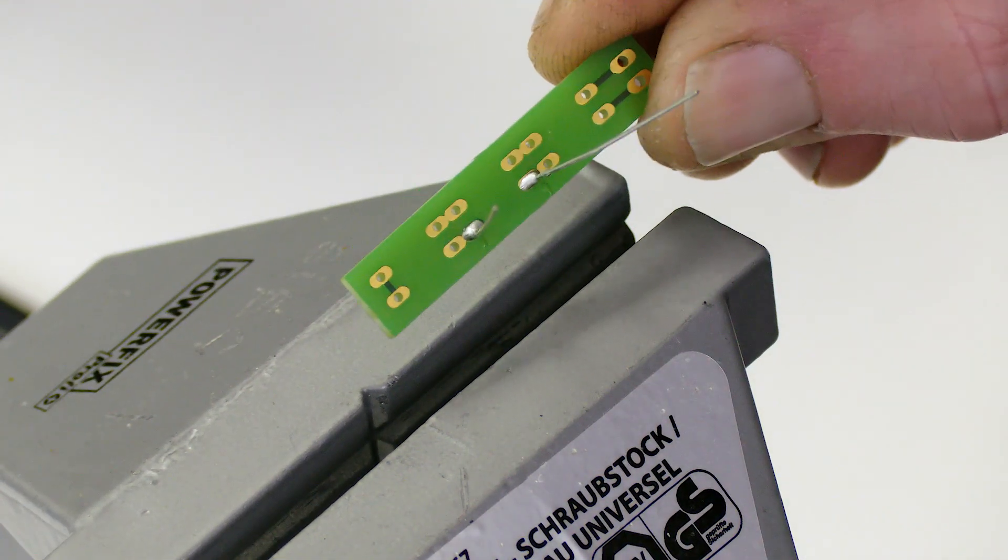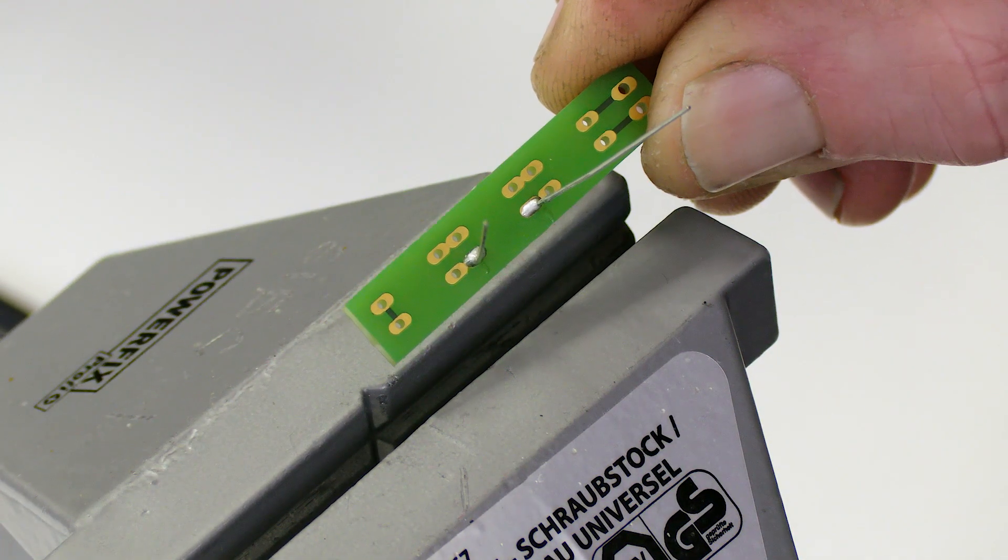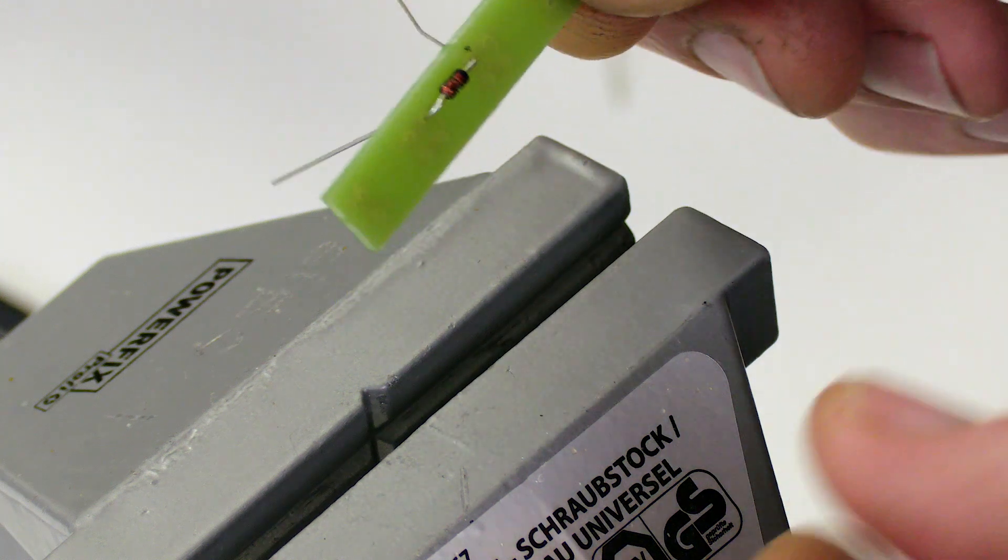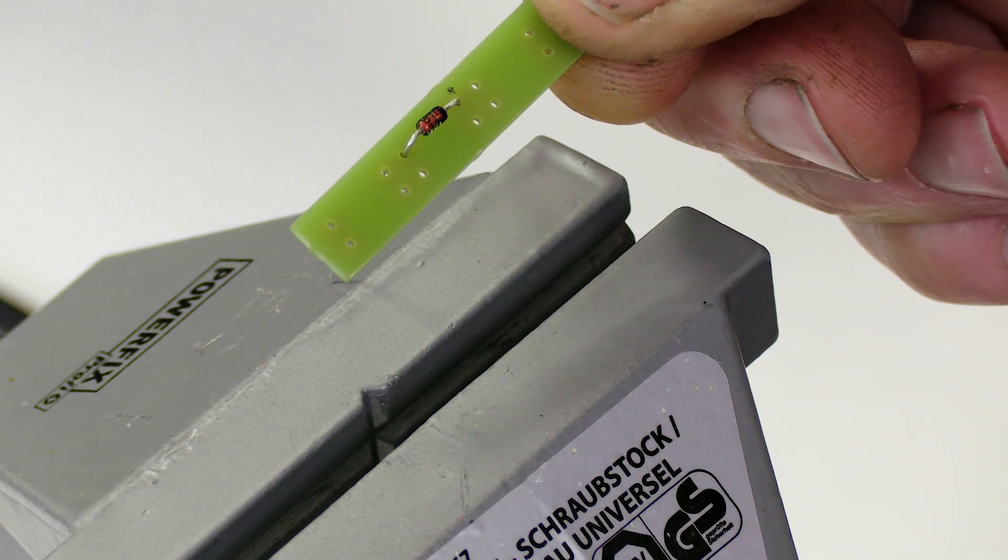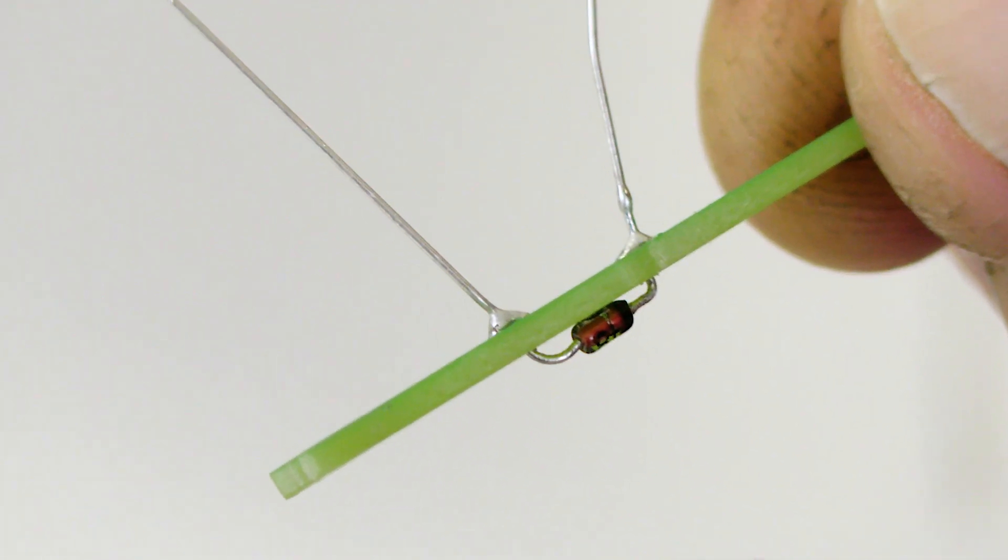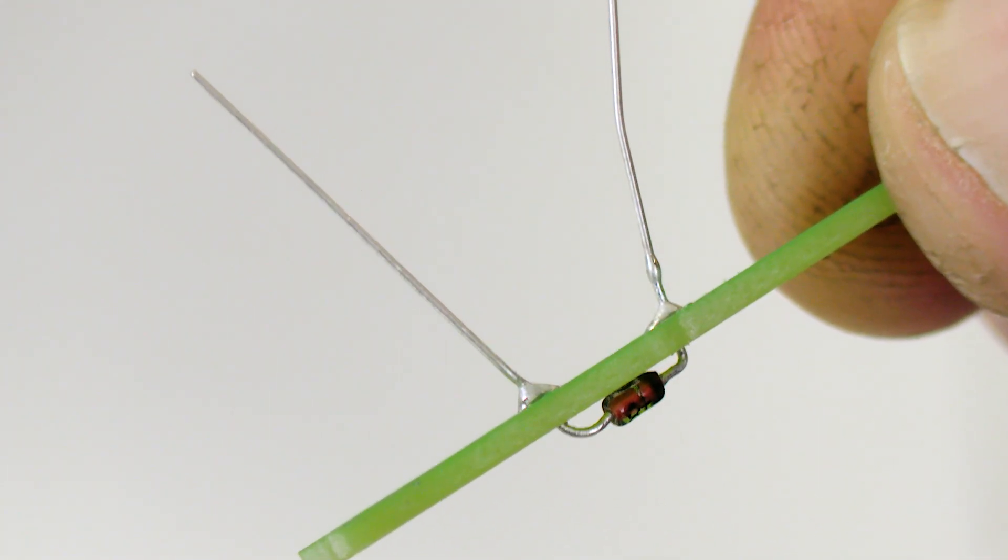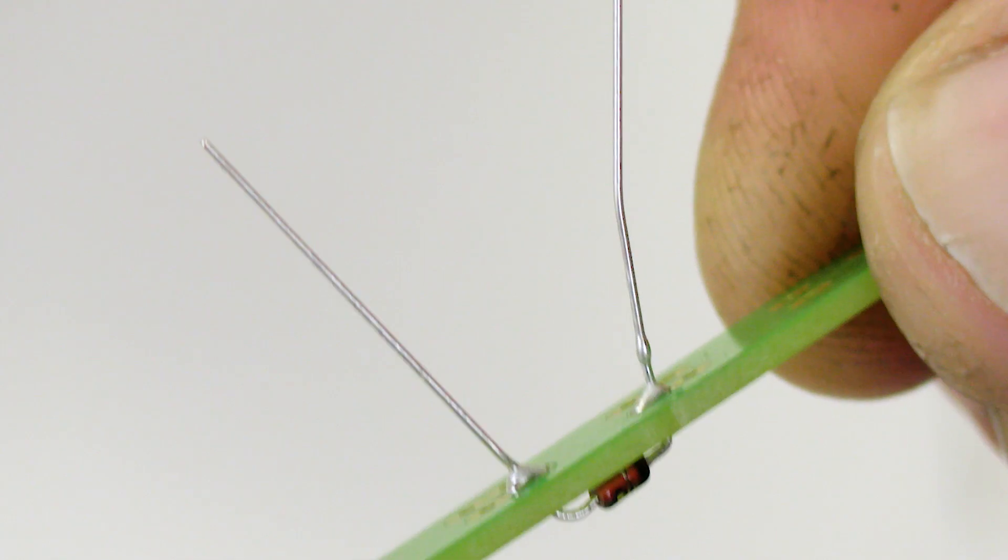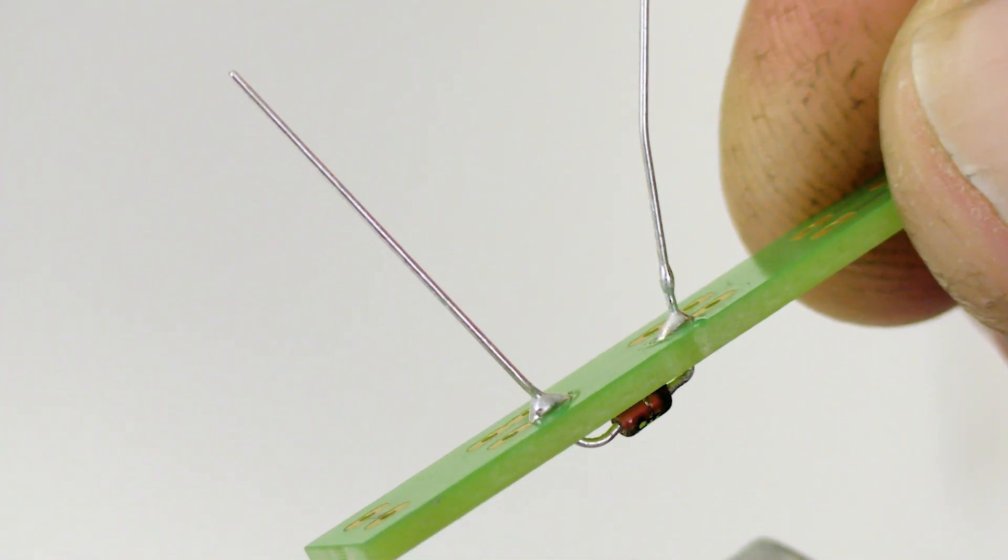Now that we have finished the second connection let's remove the board from the vise and review our work. The solder should have flowed onto the metal pads on the board and onto the legs of the diode making a good electrical connection. A good solder has a conical shape like these ones.